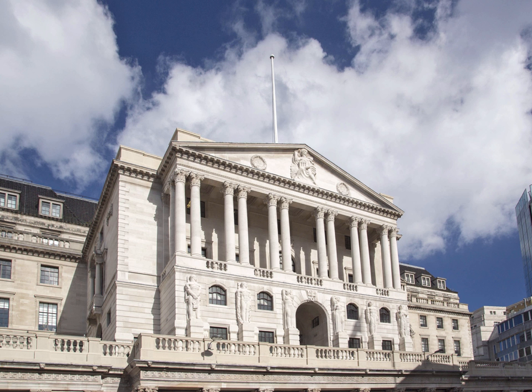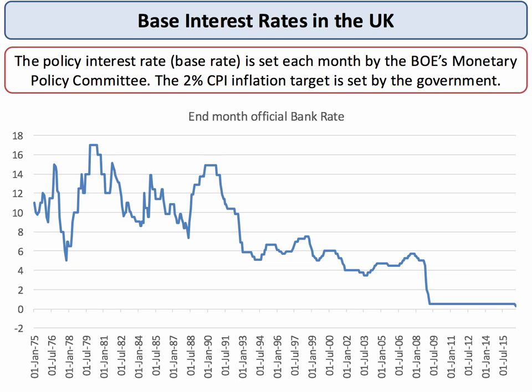Most people think about the interest rate set by the Bank of England — the so-called base rate or policy interest rate. The Bank of England, our central bank, sets policy interest rates consistent with the need to meet an inflation target of consumer price inflation of 2%. The base rate of interest shown in this chart is the rate of interest that commercial banks would have to pay if they need to get liquidity or funding from the Bank of England.